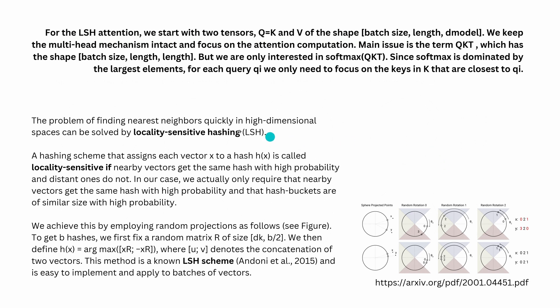Now the idea is the closer you are together here, within this arc seconds or whatever how you measure it, the higher is the probability that you are within the same hash sectors. Isn't this fascinating? You would never have guessed that it is so easy. So to formulate this for the LSH attention, we start with two tensors. You notice our query tensor of the shape batch size, length, and the model. We keep the multi-head attention mechanism intact and focus on attention computation. The main issue, of course, is the term Q·K^T, which has the shape batch size, length, length—ah, multiplications of length, length—so we go with length squared.